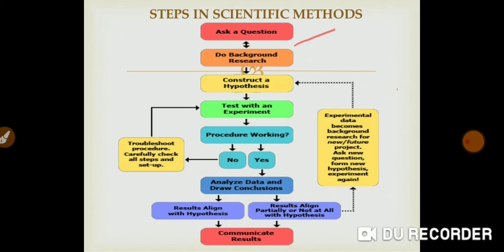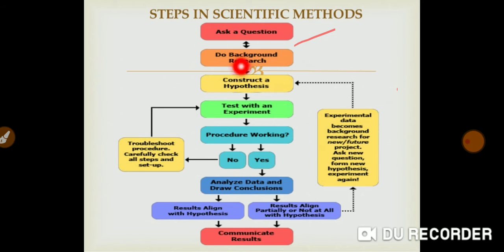The next step is to do background research. Background research means that you have to do an extensive literature review related to that topic. This is called doing background research. Next is to construct a hypothesis.